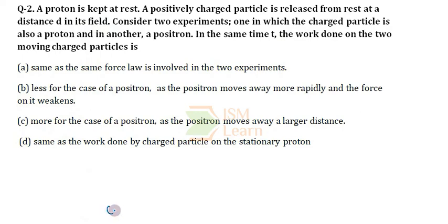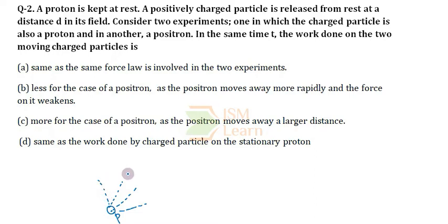There is a proton which is at rest. Since it is a positively charged particle, it will be producing an electric field around it in the surrounding space. At a distance d in that surrounding space, they place one more positively charged particle.